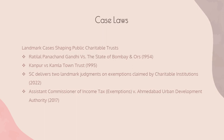In 2022, the Supreme Court delivered two landmark judgments on exemptions claimed by charitable institutions, clarifying that charitable institutions cannot engage in commercial activities beyond certain thresholds, even if undertaken for a public purpose. These judgments helped define the boundaries between charitable activities and commercial ventures for tax purposes.